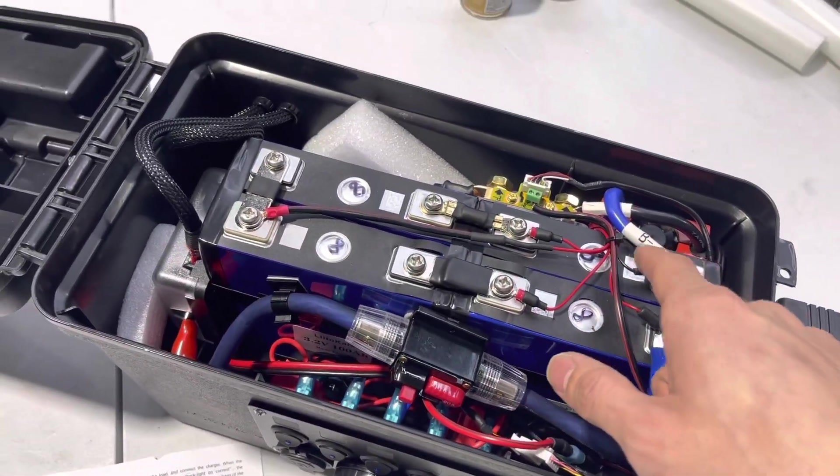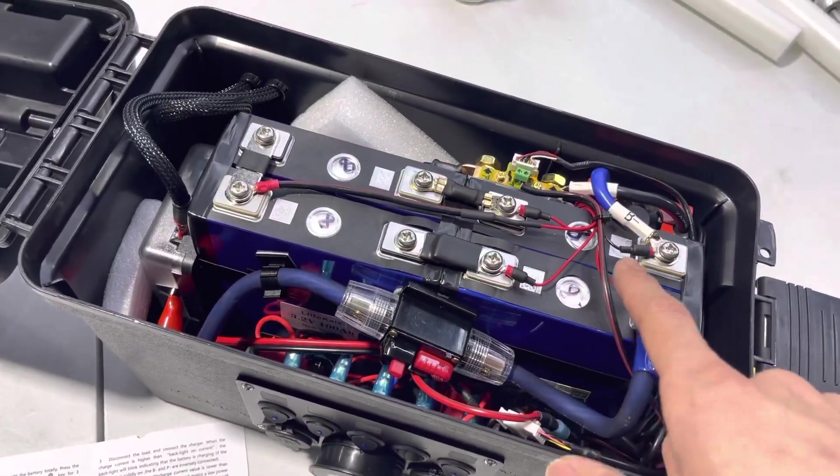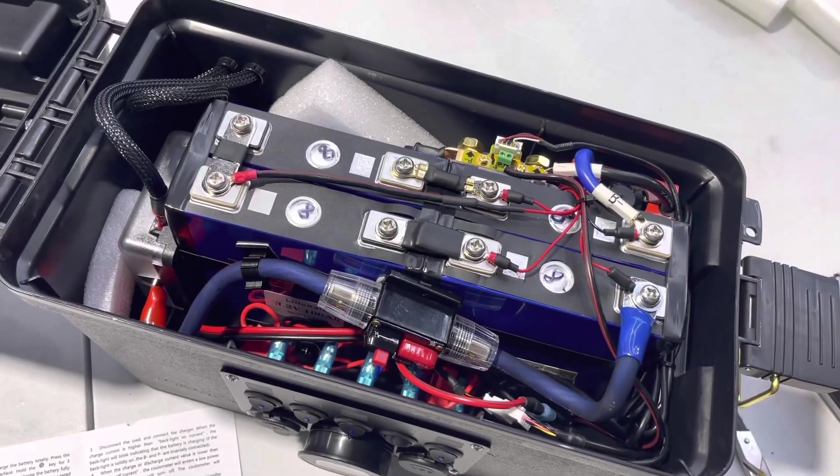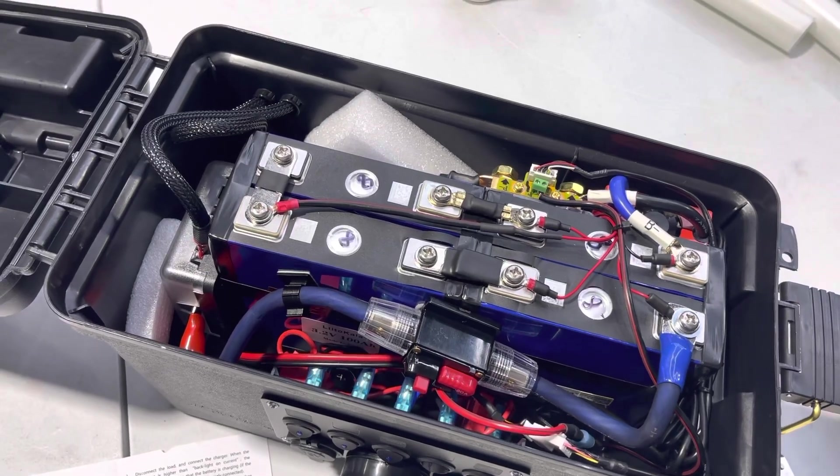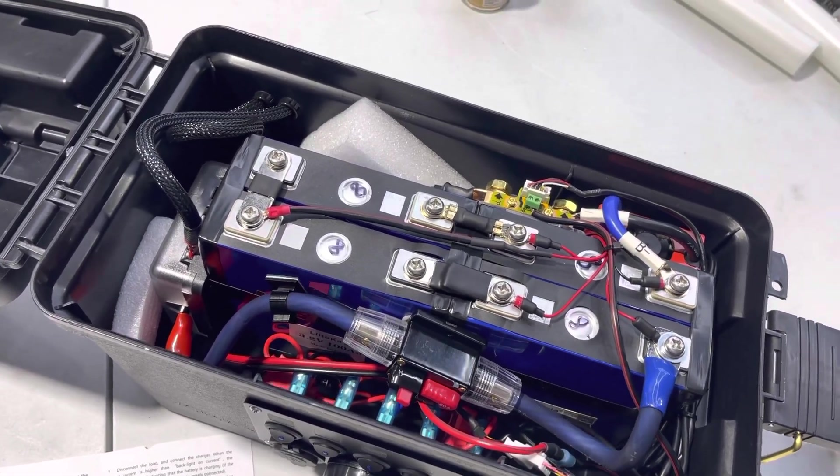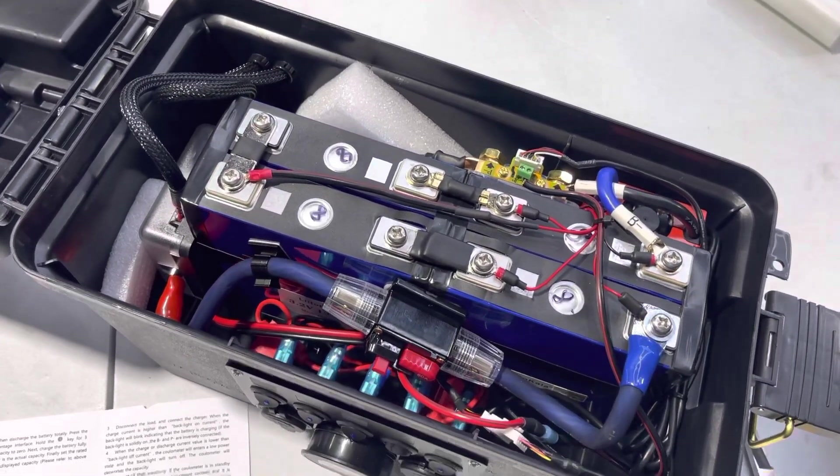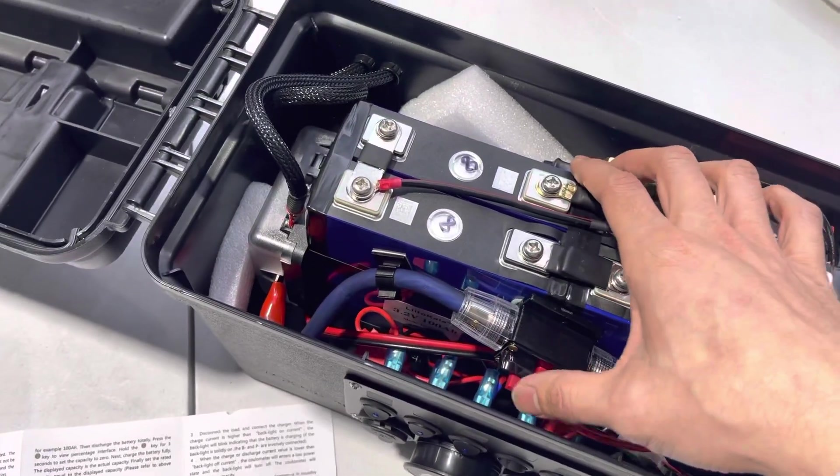So that's 3.2 volts wired in series gets you roughly 12 to 13 volts. Most cars are 12 volt DC and it usually ranges from 12 to 14 or 15 volts, so perfectly compatible with cars.